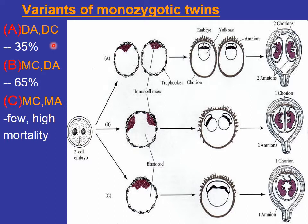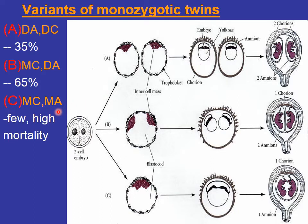In 35% of cases, separation occurs very early — usually at the two-cell stage — where the blastomeres, the two-cell organism resulting from division of the zygote, get separated. They then form their own blastocyst cavities, so each will have its own chorionic cavity and implant at two different sites, resembling dizygotic twins.